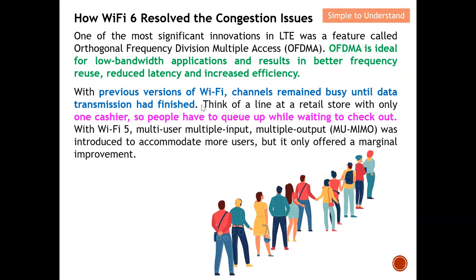Earlier I mentioned one cashier, but for Wi-Fi 5 they can have multiple cashiers. This Multiple User, Multiple Input and Multiple Output was basically introduced to accommodate more users. However, it only offers a marginal improvement — just a little bit. With Wi-Fi 5 they expanded from one cashier to multiple users — in short, Wi-Fi 5 went from one cashier to becoming a multiple-user system. I will explain a little bit more on the next few slides.